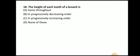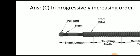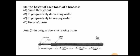Next question: the height of each tooth of a broach is — the same throughout, in progressively decreasing order, or in progressively increasing order? The answer is in progressively increasing order, as can be seen in the broach diagram.